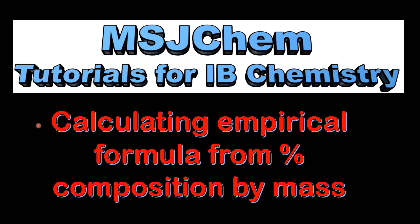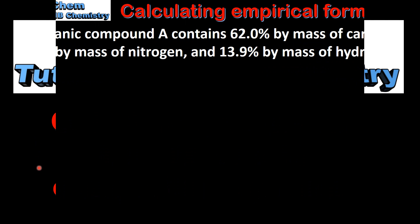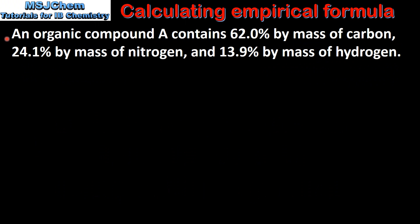This is MSJChem. In this video I will be looking at calculating empirical formula from percentage composition by mass. An organic compound A contains 62% by mass of carbon, 24.1% by mass of nitrogen, and 13.9% by mass of hydrogen. From this data we will determine the empirical formula of organic compound A.